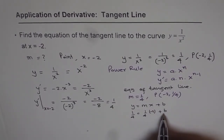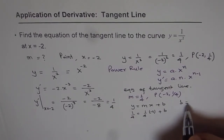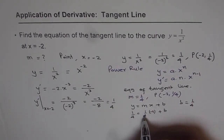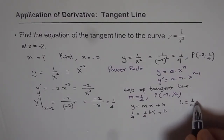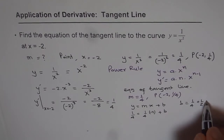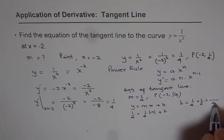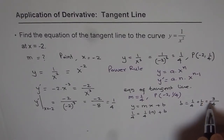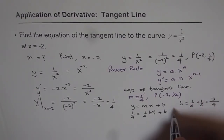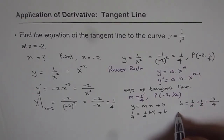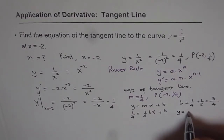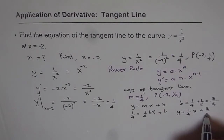From here we can find b. So b equals 1/4 minus (1/4 times minus 2), which is 1/4 plus 1/2. Taking a common denominator of 4, that gives us 1/4 plus 2/4 equals 3/4. So b equals 3/4, and therefore the equation of the tangent line is y equals (1/4)x plus 3/4.